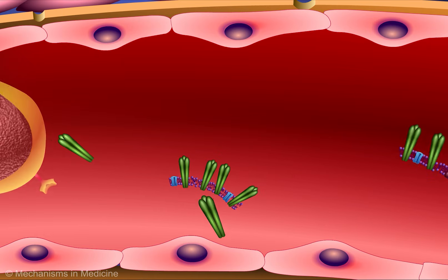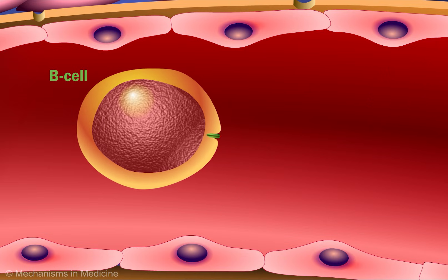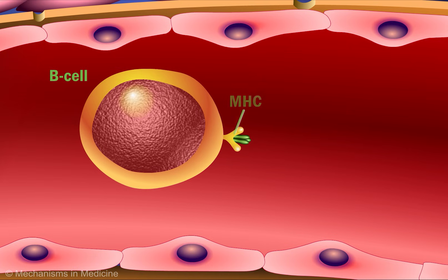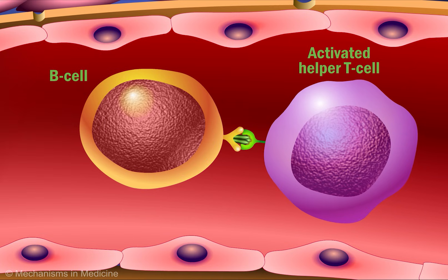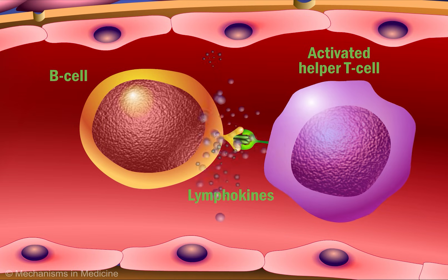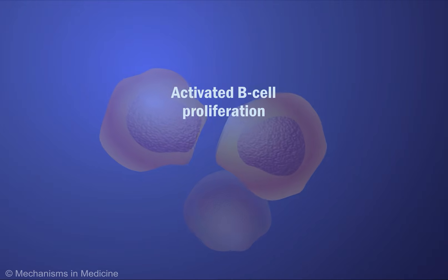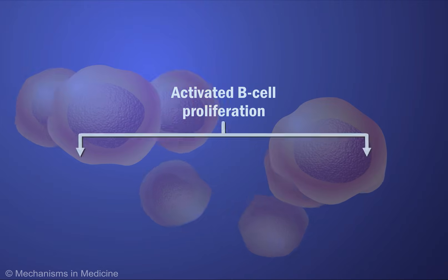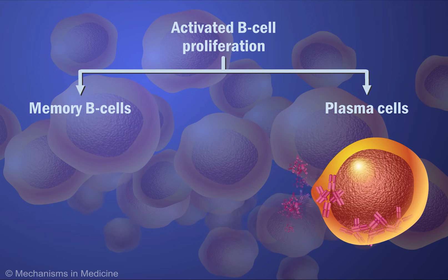Unlike T-cells, B-cells are able to ingest hemagglutinin independent of the MHC. Once internalized, B-cells process the hemagglutinin antigen and present it on their surface in combination with an MHC. When activated helper T-cells interact with activated B-cells expressing antigen MHC receptors, they begin secreting lymphokines. Lymphokines trigger activated B-cell proliferation, leading to either their differentiation into memory B-cells or into plasma cells. Plasma cells produce hemagglutinin antibodies specific to the strain of influenza contained in the vaccine.